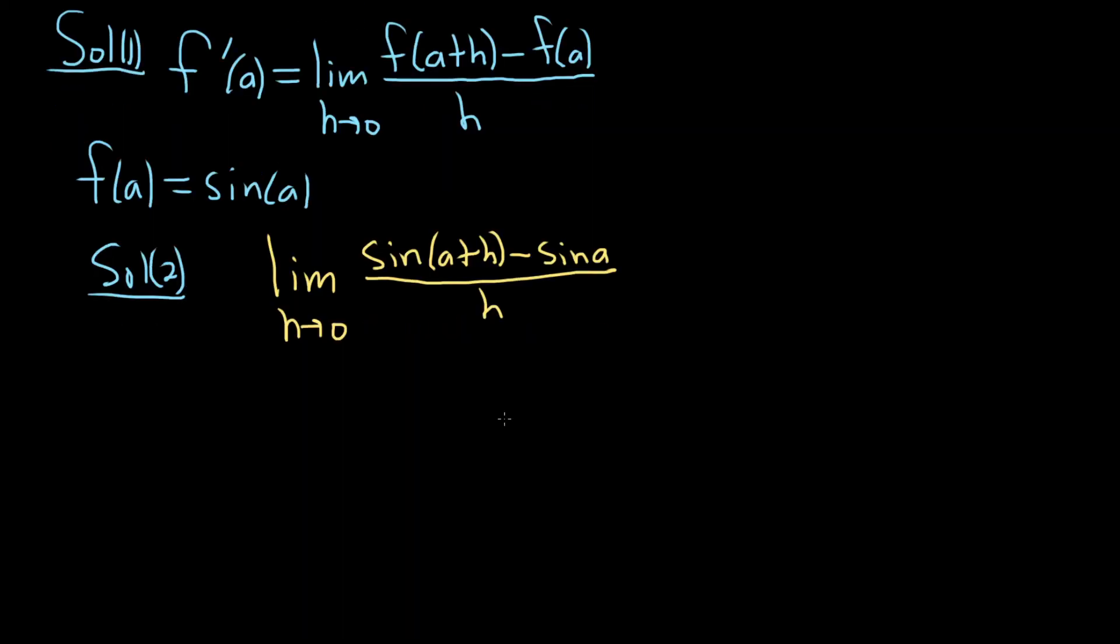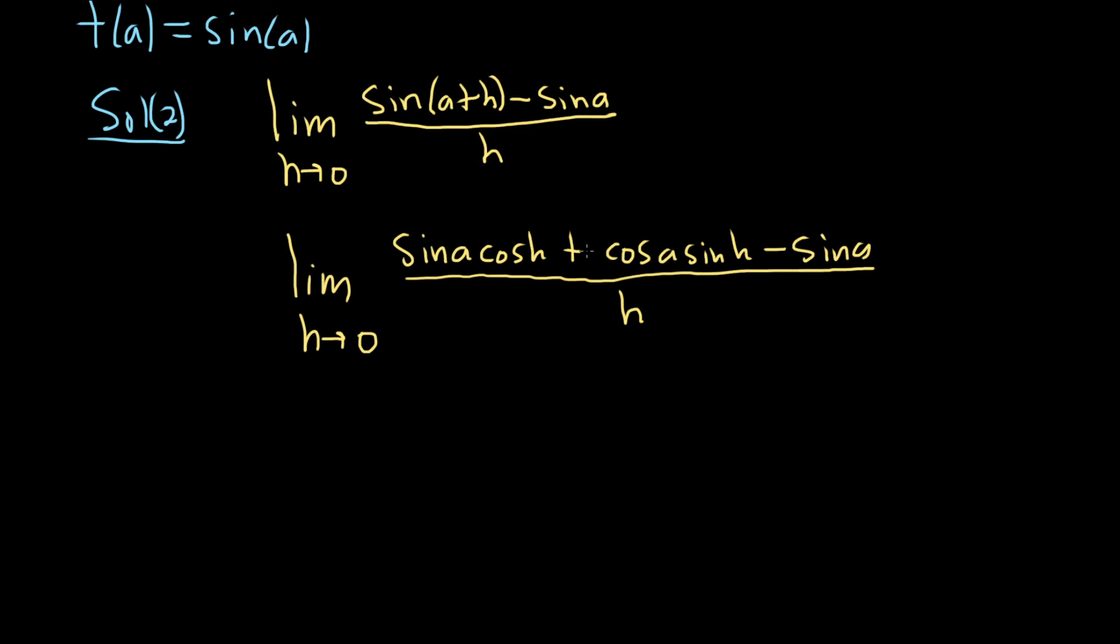And so there's a trig identity that we can use. So this is the limit as h approaches 0. And the way I memorize this one is you just basically alternate the sine into cosine. So sine of a plus h will be sine a cosine h plus cosine a sine h minus sine a all over h. So you just alternate them: sine, cosine, cosine, sine.